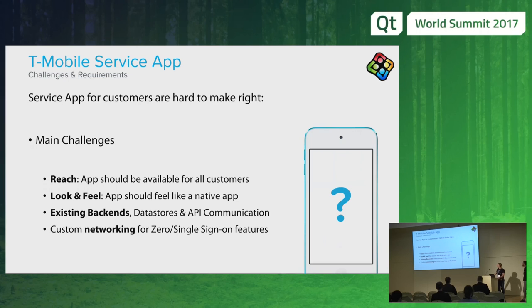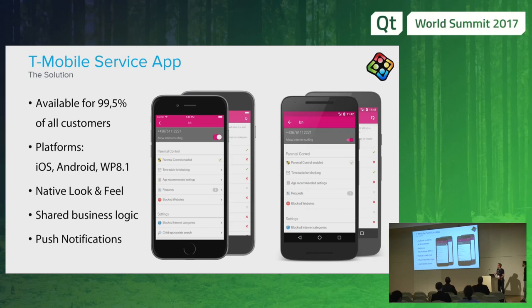This leads to the challenge of custom networking. For our client, it was important to support zero sign-on on mobile network and single sign-on across all API endpoints, requiring custom code and existing libraries to be ready in the service app. What we came up with is an app available for more than 99% of all customers, developed for iOS, Android, and Windows Phone. As you can see, the look and feel is native to each platform — iOS on the left, Android on the right.